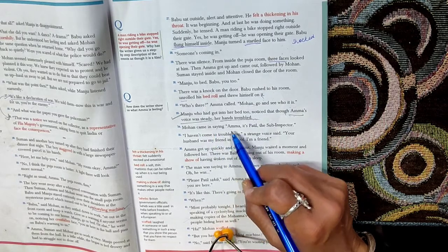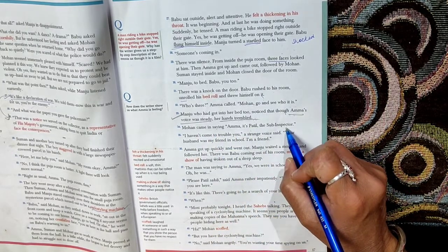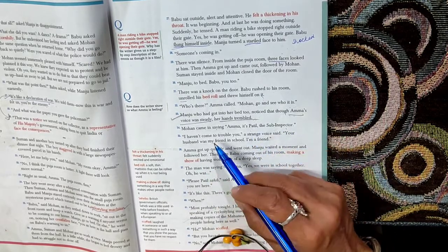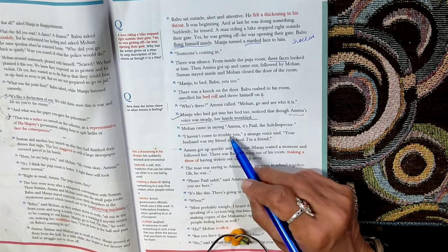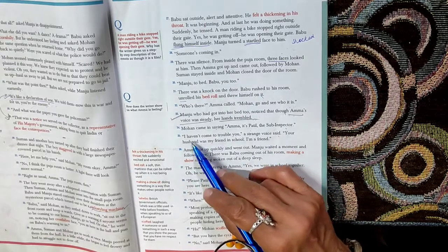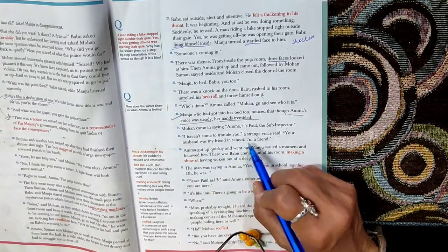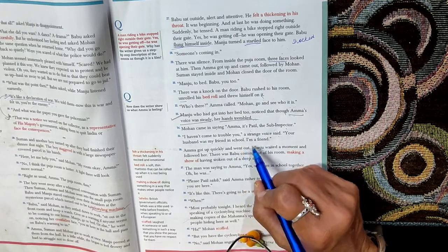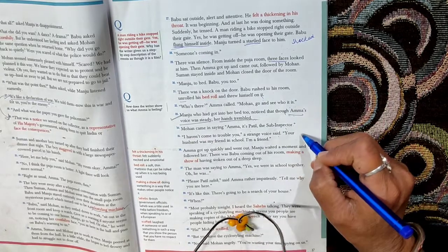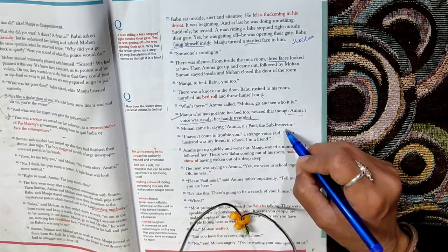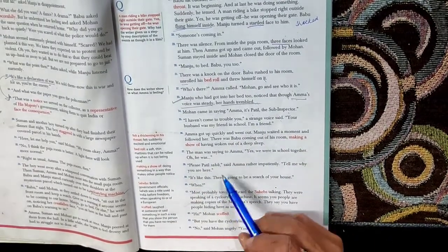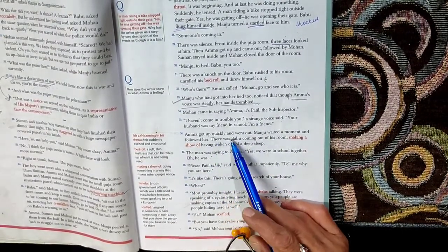Now Mohan came in saying, Amma, it's Patil, the sub-inspector. So who was outside? Outside there is a sub-inspector whose name is Patil. I haven't come to trouble you, a strange voice said. Now this man enters inside and tells both of them that I have not come to trouble you. Your husband was my friend in school. I am a friend. So Amma's husband and Patil, they both were friends in school. And he says I am a friend, I am a well-wisher.